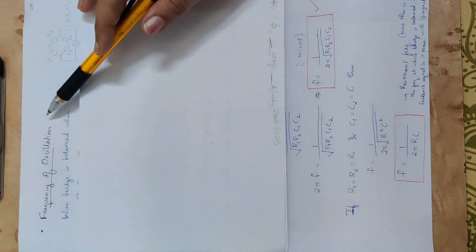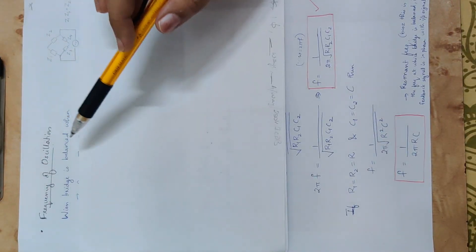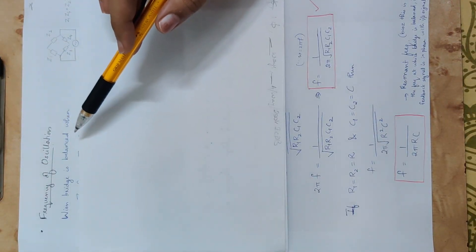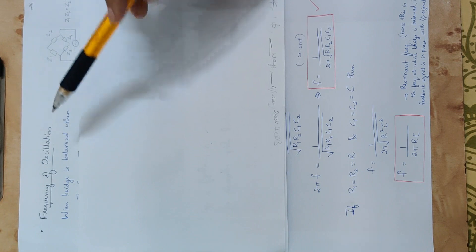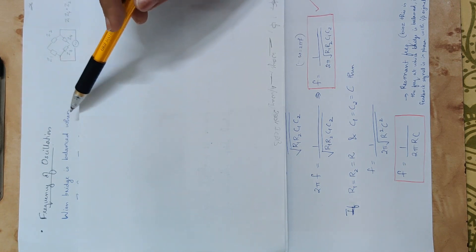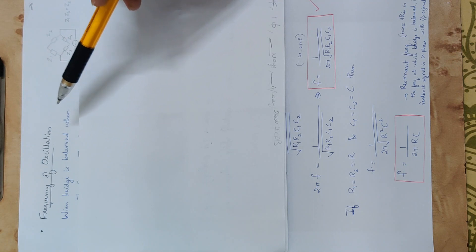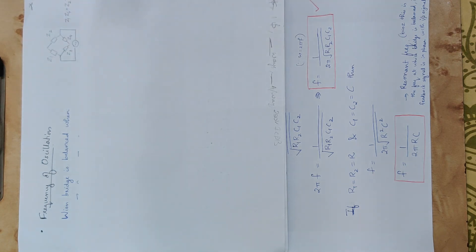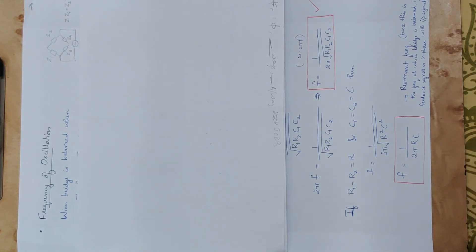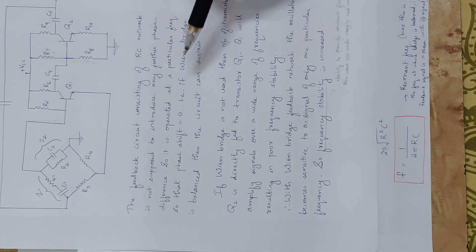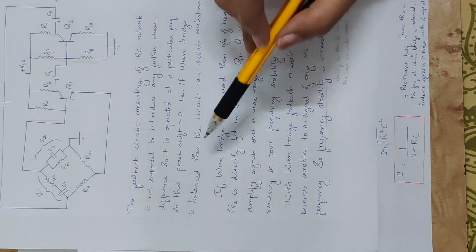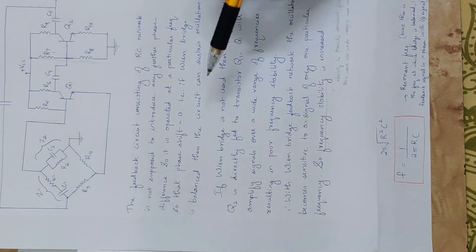Next we will derive the frequency of oscillation of the Wien Bridge oscillator. We will work with the Wien Bridge oscillator and its frequency of oscillation. When the Wien Bridge is balanced, the circuit can sustain oscillations.